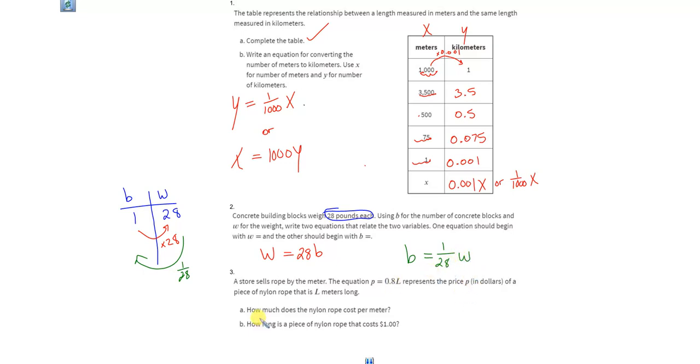So let's jump right into number three, since that was pretty short. A store sells rope by the meter. The equation P equals 0.8L represents the price P in dollars of a piece of nylon rope that is L meters long. So this is money, right here, and this is length in meters. All right, the question is, how much does the nylon rope cost per meter?